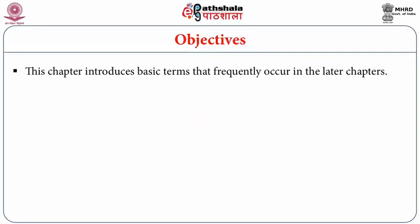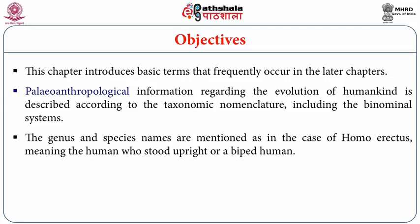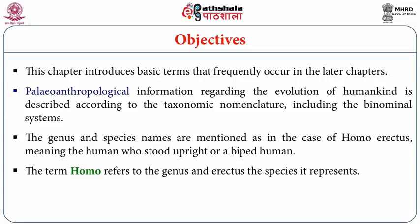Objectives: this chapter introduces basic terms that frequently occur in the later chapters. Paleo-anthropological information regarding the evolution of humankind is described according to taxonomic nomenclature, including the binomial system. The genus and species names are mentioned, as in the case of Homo erectus — Homo refers to genus, erectus refers to species, meaning the human who stood upright or a bipedal human.